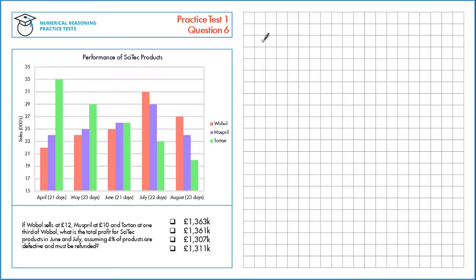If Wobol sells at £12, Muspril at £10, and Torton at 1/3 of Wobol, what is the total profit for Cytec products in June and July, assuming 4% of products are defective and must be refunded?